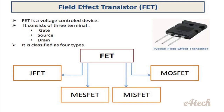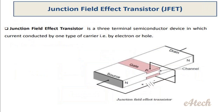J-FET is a Junction Field Effect Transistor. It is a three terminal semiconductor device in which the current is conducted by one type of carrier — that is, either electrons or holes. It is a charged carrier.